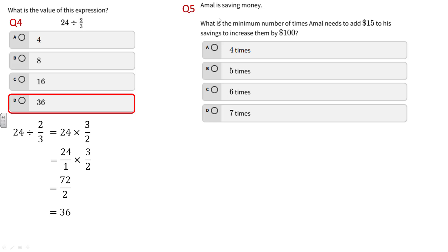Number five: Amal is saving money. What's the minimum number of times that he needs to add $15 to his savings to increase them by $100? There's a little trickiness to this question because we can't add $15 and get exactly an increase of $100. It would have been better if it said increased by $100 or more.